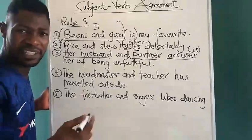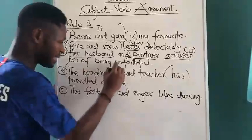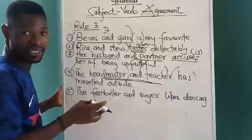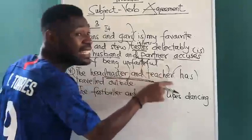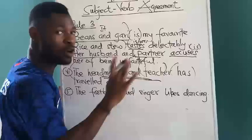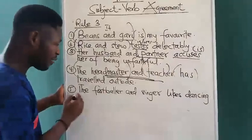We also have 'the headmaster and teacher.' We have headmasters who teach — he is the headmaster and he also teaches, so as one: 'has'. Or 'the headmaster and teacher is traveling tomorrow' — headmaster and teacher is seen as one thing. But if we say 'the headmaster and the teacher', it would refer to two different individual entities. Therefore, 'the headmaster and the teacher have' or 'are' — plural verb without S. Once you don't have any determiner, headmaster is the same as teacher.